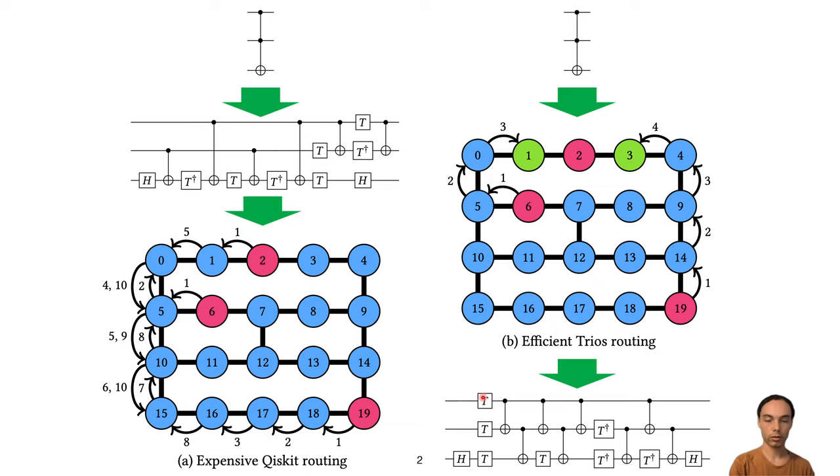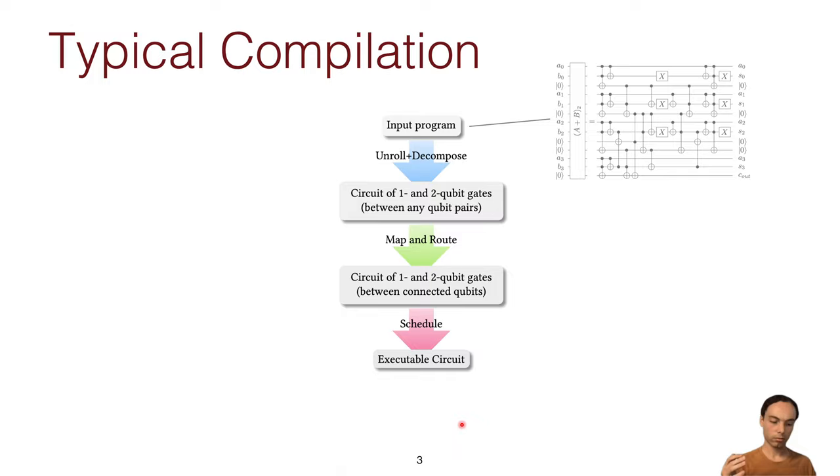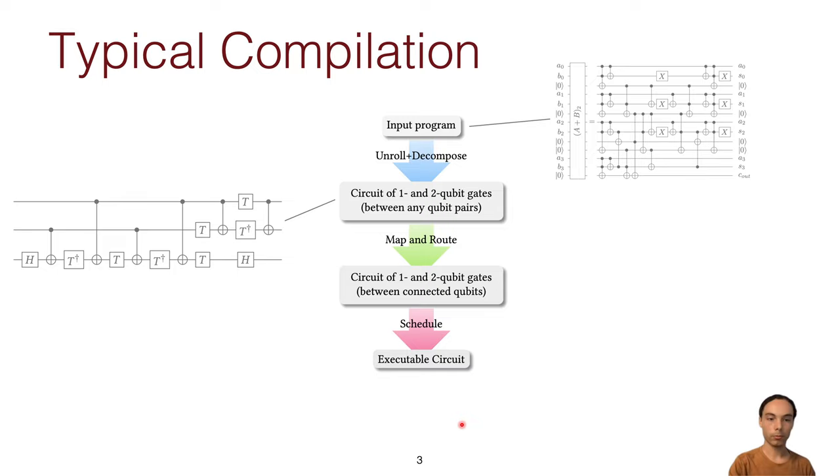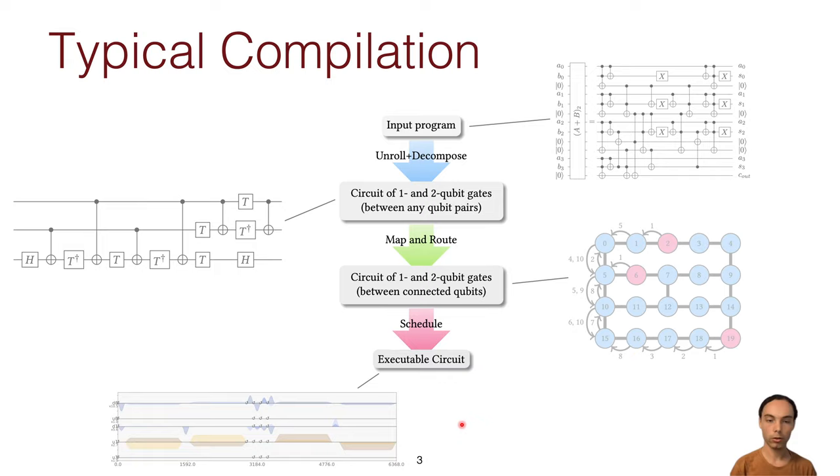So just to give an overview of typical compilation method, we start with an input program, which is a hierarchical definition of a program with blocks and repetitions potentially, and then we unflatten that whole thing down into one and two qubit gates, and then route by adding swaps for communication, and then turn that into a schedule of analog pulses that get transmitted to the qubits when you actually execute the circuit.